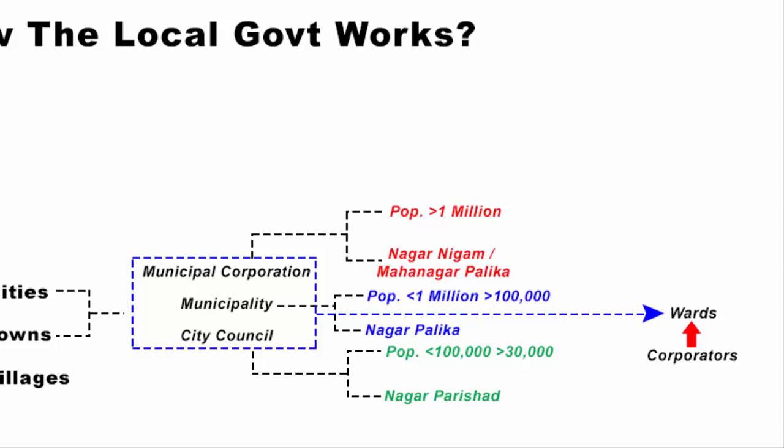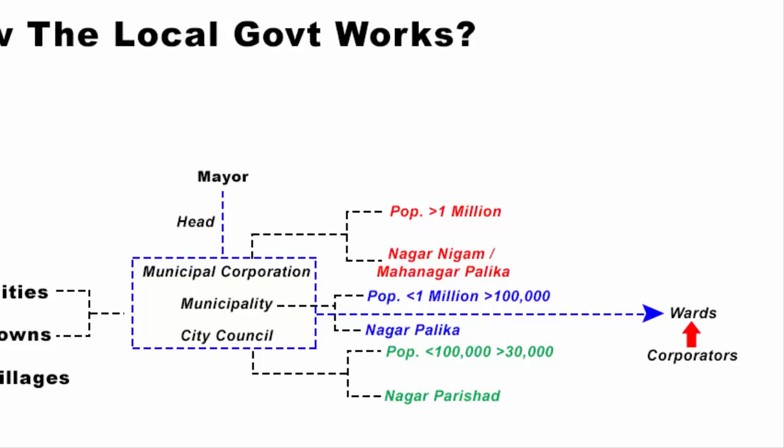By electing corporators, the entire local government slowly emerges. Naturally, that local government needs a head — the head is in the form of a mayor. A mayor is the head of a municipal government; consider their role like that of a governor or president at state and national level. However, the actual executive power lies in the hands of a municipal commissioner, who is a civil servant — consider their role like that of a chief minister or prime minister.